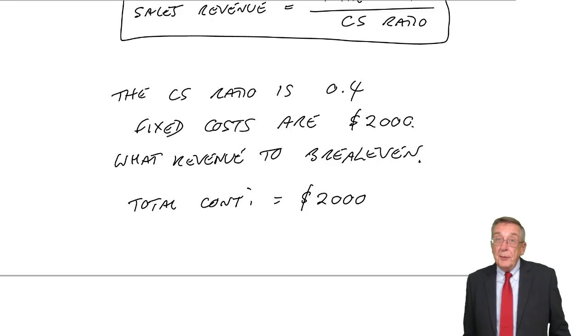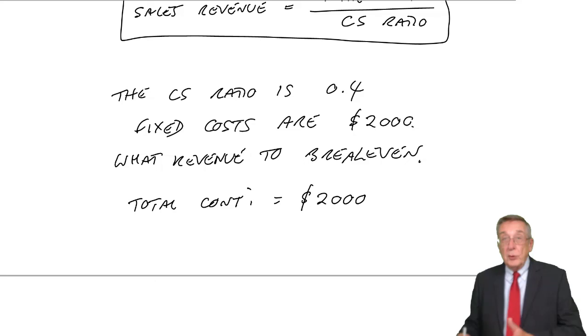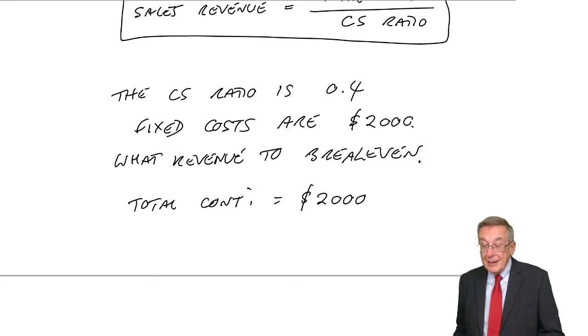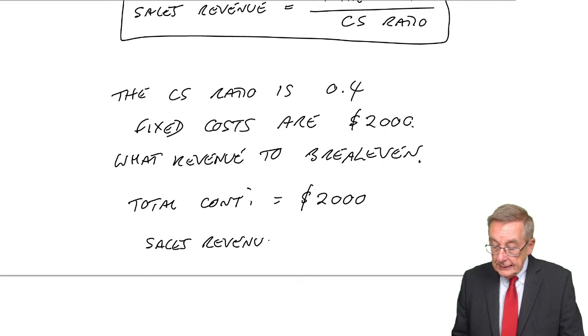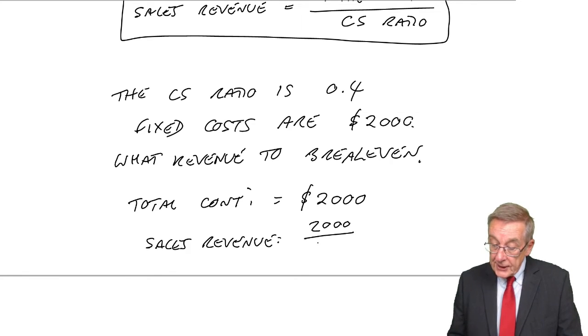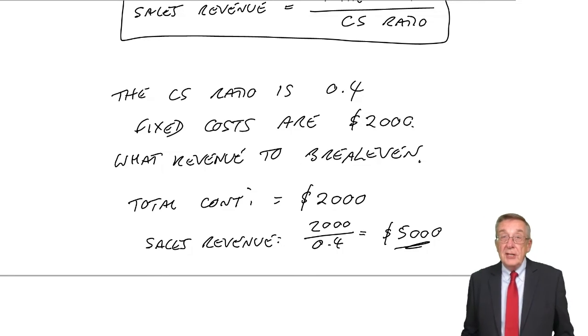Now, I know the CS ratio is 0.4, so I know that always the contribution is 0.4 times the revenue. Well, since I know the contribution, we can write straight down the sales revenue. Contribution over the CS ratio, $5,000. The break even revenue is $5,000.